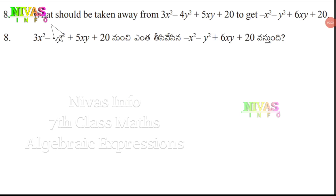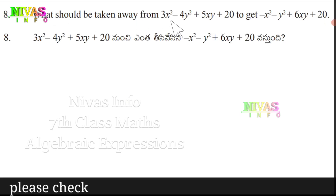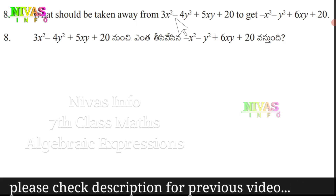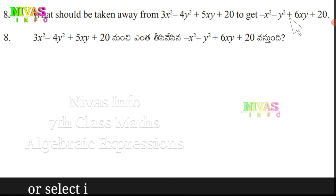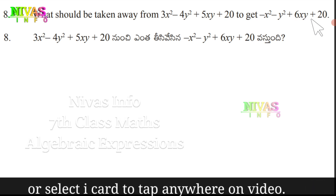Question number 8: What should be taken away from 3x² minus 4y² plus 5xy plus 20 to get x² minus y² plus 6xy plus 20?